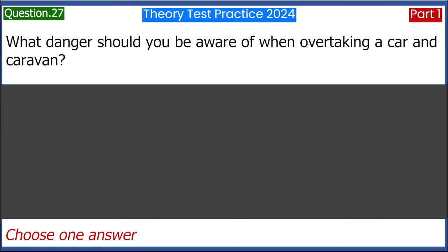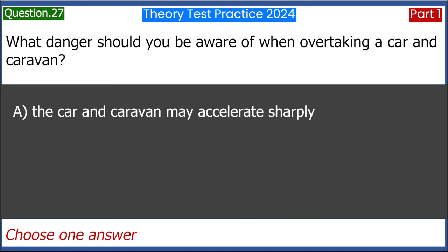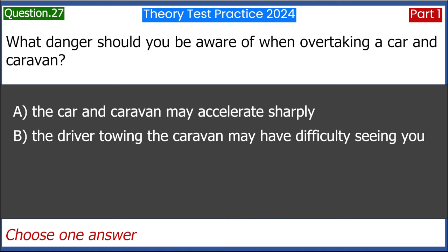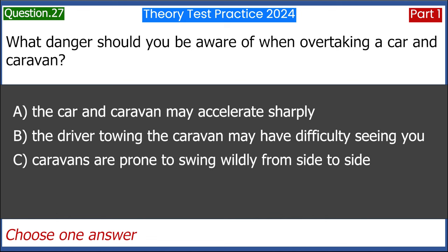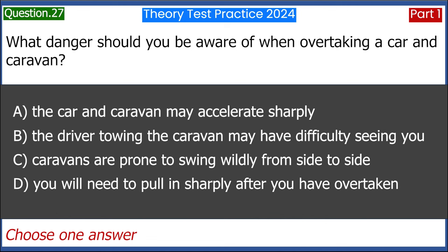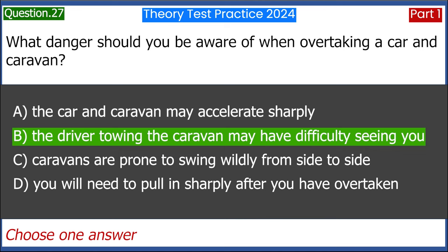What danger should you be aware of when overtaking a car and caravan? A. The car and caravan may accelerate sharply. B. The driver towing the caravan may have difficulty seeing you. C. Caravans are prone to swing wildly from side to side. D. You will need to pull in sharply after you have overtaken. Answer: B. The driver towing the caravan may have difficulty seeing you.